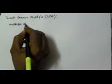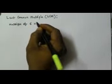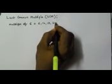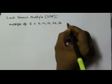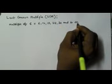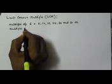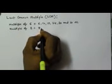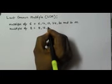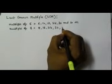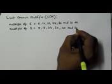For example, multiples of 6 are 6, 12, 18, 24, and so on. And multiples of 8 are 8, 16, 24, 32, 40, and so on.